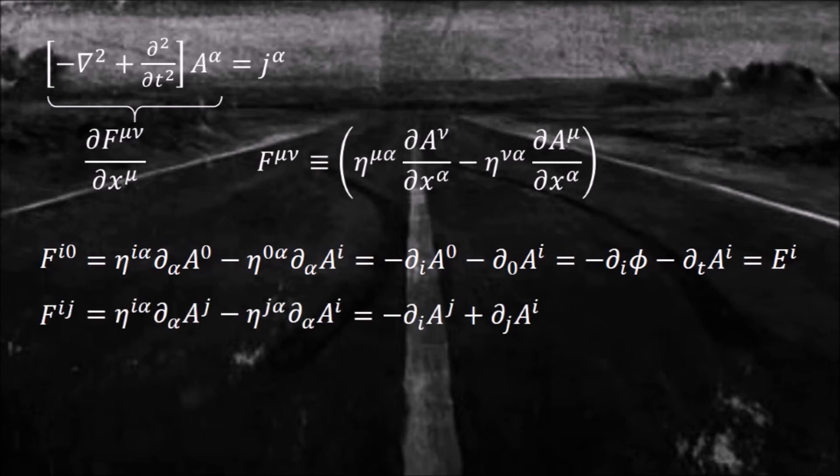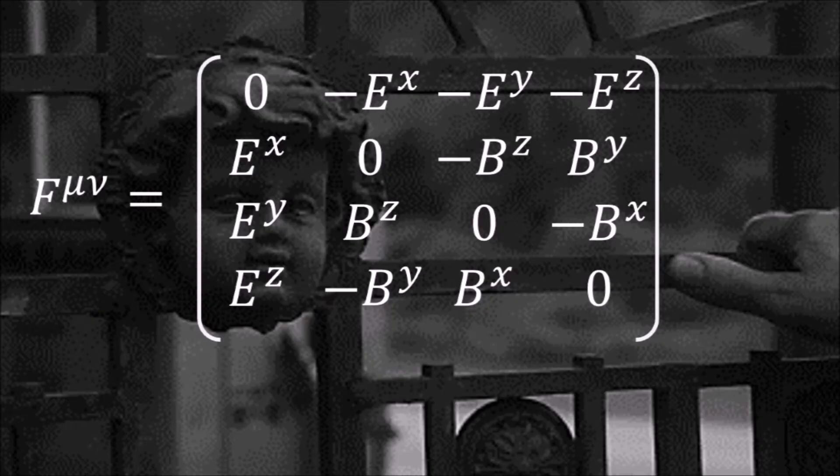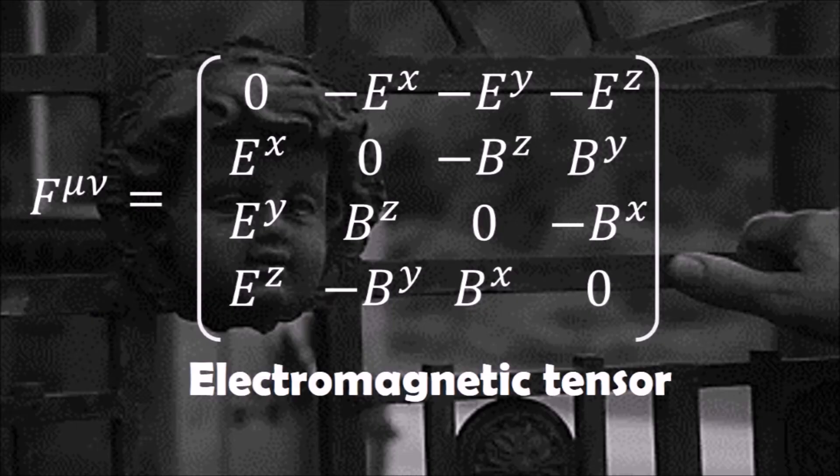How about F ij? If you recall the definition of a curl in Cartesian coordinates, you will find it is just that, a curl of A. For instance, if i equals y and j equals x, we'll get that F yx is the z component of B. You can easily work out all the other elements. This is called the electromagnetic tensor.